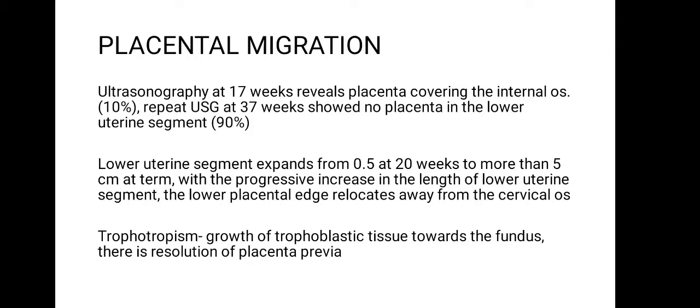Even though the USG at 17 weeks shows the placenta is low-lying, when repeated at 37 weeks the placenta appears to have migrated to the normal position. This is because as the lower uterine segment expands and increases in length, it displaces the placental edge away from the os. Another reason is trophotropism — the growth of trophoblastic tissue towards the fundus — leading to resolution of placenta previa.